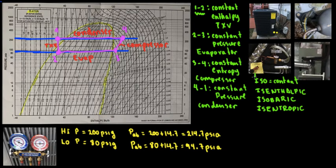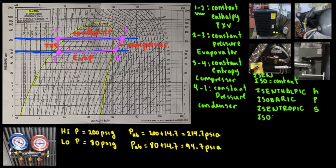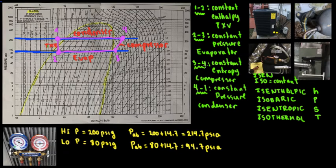So 'iso' and 'isen' both mean constant. Isenthalpic is related to enthalpy, isobaric to pressure, isentropic to entropy — which they call S — and isothermal to temperature. Those are the four processes: one to two, two to three, three to four, and four to one.